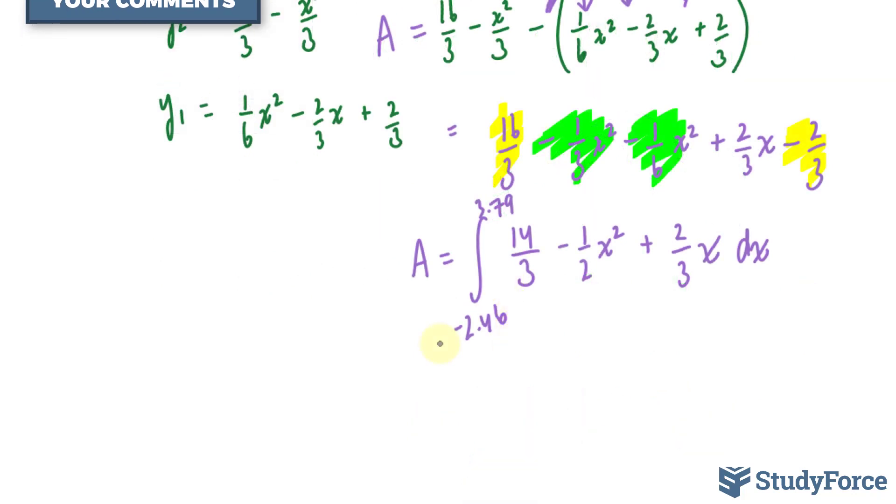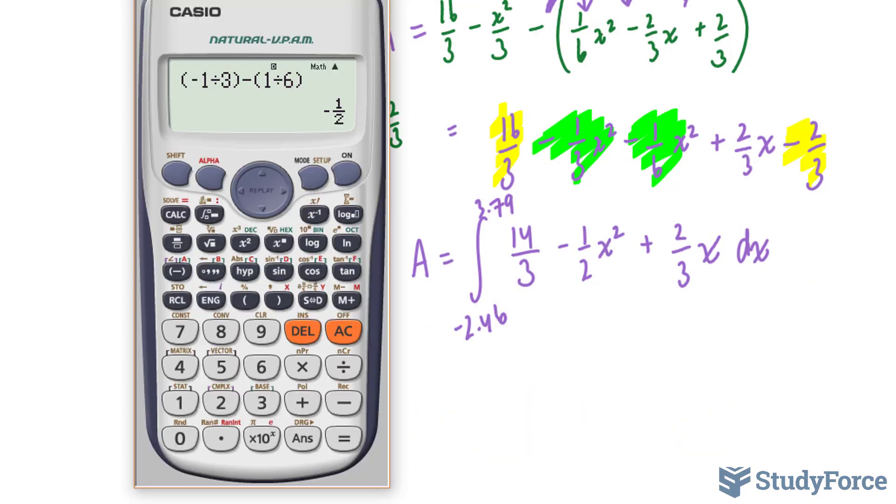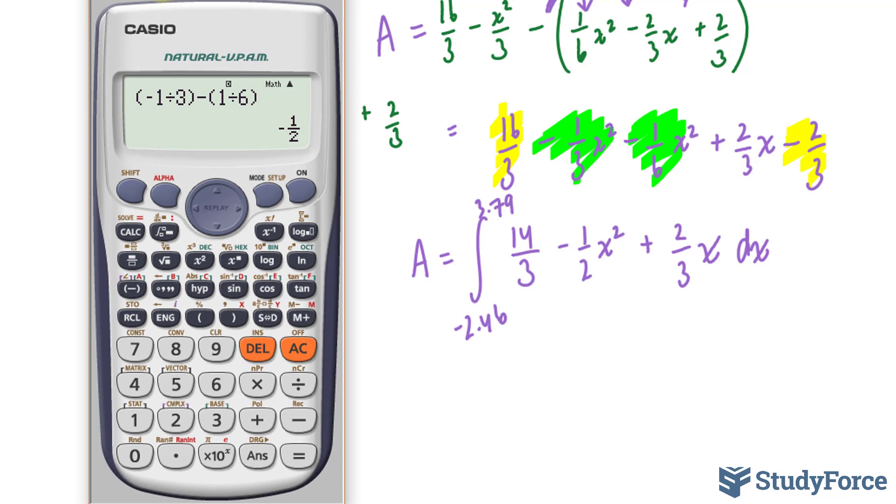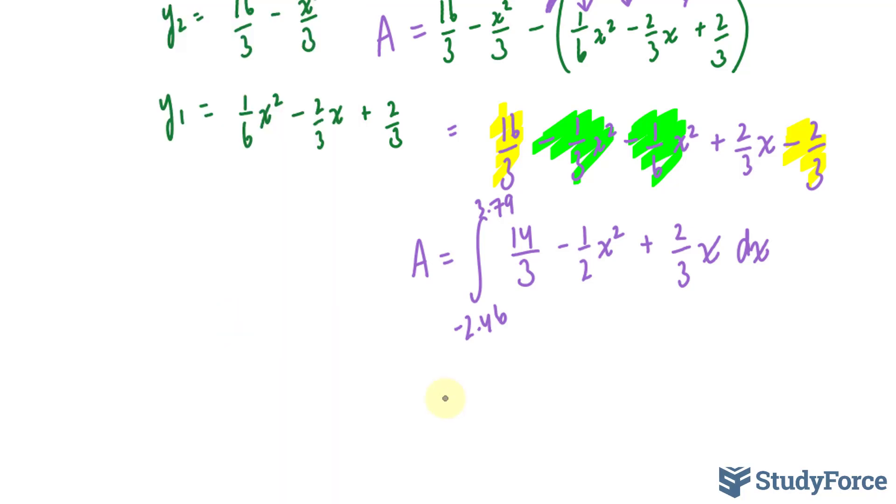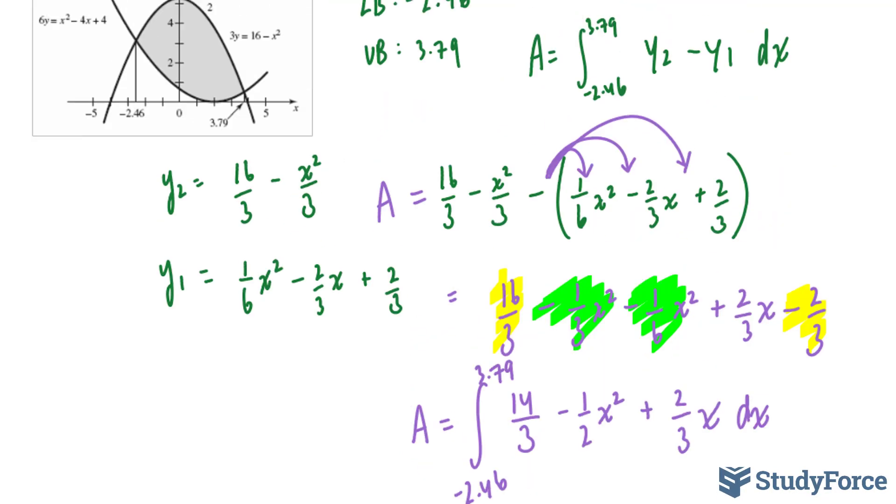There you go. Now instead of finding the antiderivative and doing this manually, I'll use a function on my calculator that will quickly tell me what the area is. What I can do is click this button. And now I can input my lower and upper bounds. And my function is 14 over 3 minus 1 over 2 x to the power of 2 plus 2 over 3 times the variable x. When you're done, you click enter. And I get 20.38. My area is equal to approximately 20.4. That is the area that's shaded.